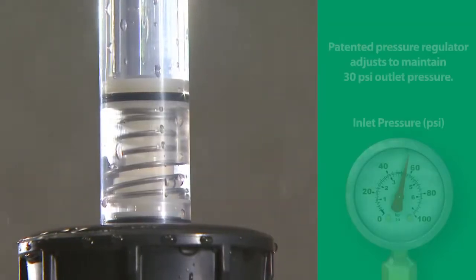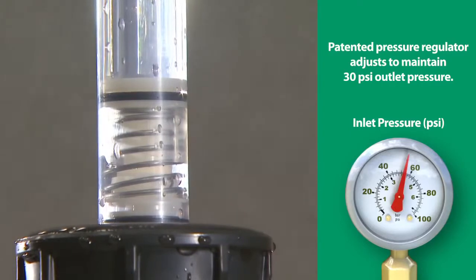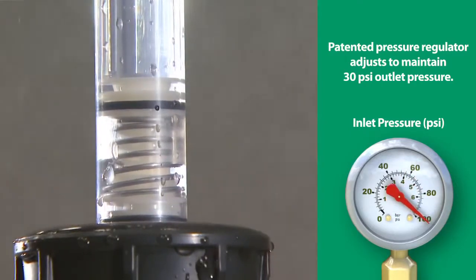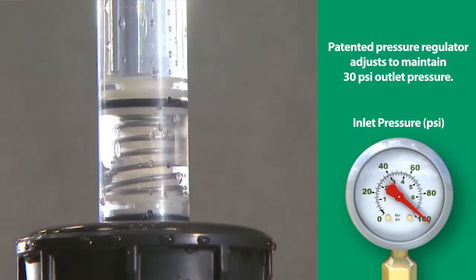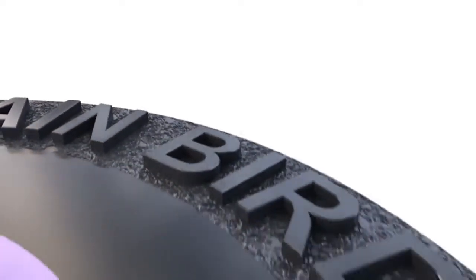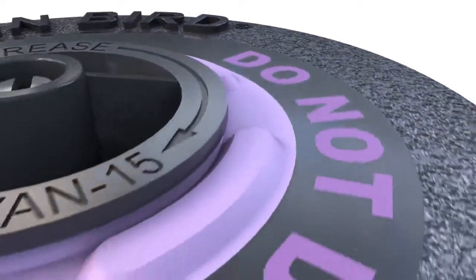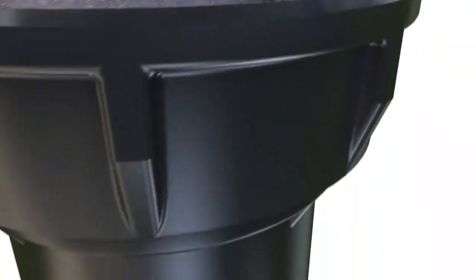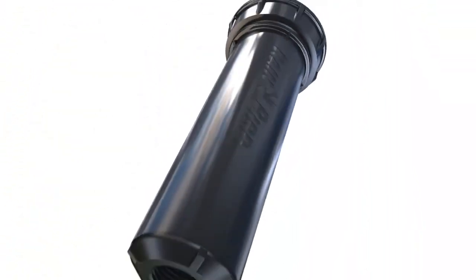With the patented PRS device that made the 1800 series famous, the RD1800 delivers consistent outlet pressure regardless of inlet pressure fluctuation. So, even in applications with wide pressure variations, the RD1800 doesn't miss a beat. And that takes the pressure off you.